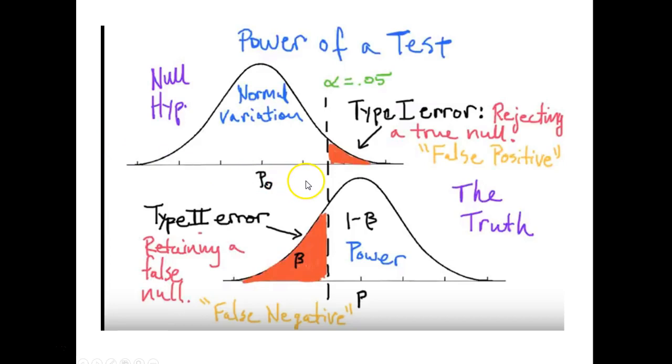So to look at what error we have, the way we do that is we take that alpha level, which is right here, and we look at that critical value for the cutoff and we draw right down to across our new normal curve.